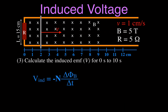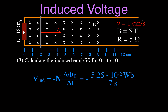Now we're going to calculate the actual induced voltage from 0 to 10 seconds. The equation we use is Faraday's Law, and we have a single coil of wire. The change in magnetic flux is 5.25 times 10 to the minus 2 Webers, and don't forget the minus sign — this is Lenz's Law. The time is not 10 seconds; the magnetic flux is only changing for those first 7 seconds, because we go from 2 to 9 at 1 centimeter a second. That means the induced voltage is minus 7.5 times 10 to the minus 3 volts.